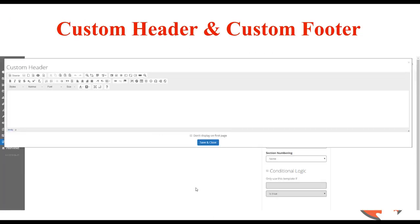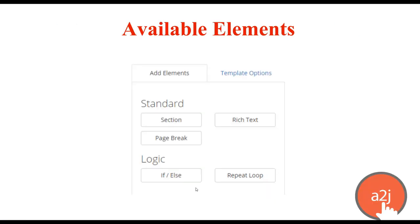Template options is also where you can add a custom header or a custom footer, and you can allow it to display on the first page or not. You have full editing options within the header and footer as well. Once you've set all your options and created your header or footer, you move on to adding elements. Within a text template in A to J, you can add a section, rich text, a page break, if-else, and repeat loops.